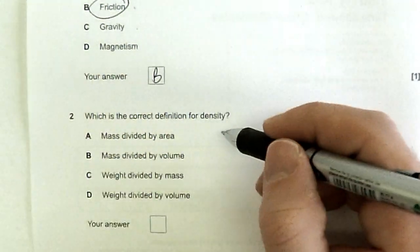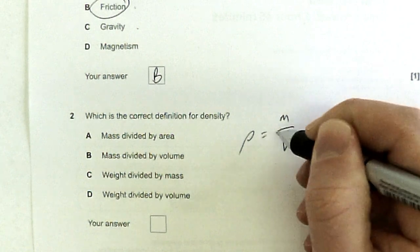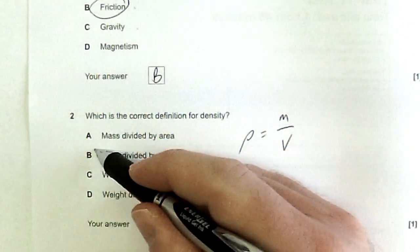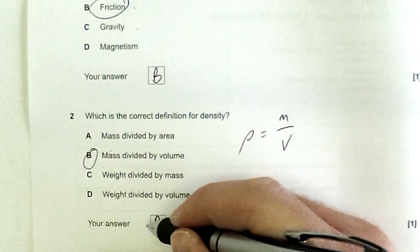What's the correct definition for density? This is one of the equations you need to remember. Density is mass over volume. So which one is mass divided by volume? That's B. Just double check that there isn't anything else that seems sensible. No, so that one's got to be B.